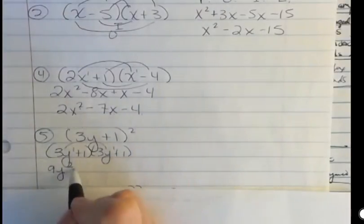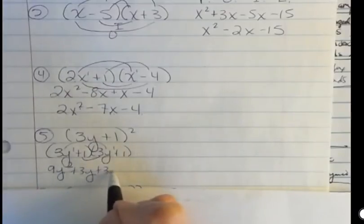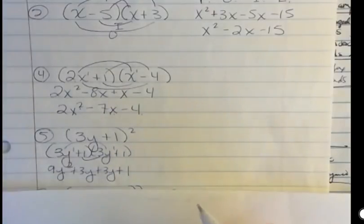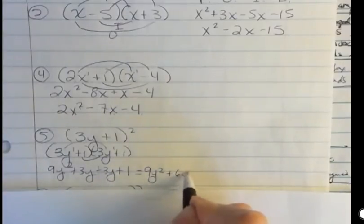So we have 3y times 3y is 9y to the second, and then we have 3y for the outside, and then we have 3y for the inside, 1 times 3y. And then 1 times 1 is our last, which is 1. And so what does that give you? It gives you 9y squared plus 6y plus 1.